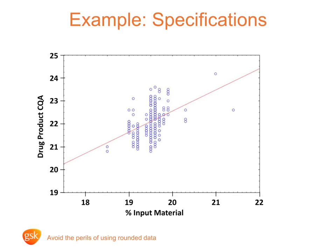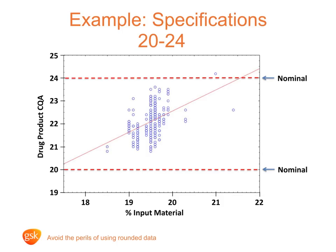This is Phil, and I want to discuss another example which again highlights the importance of using recorded data. I will then go on to use this example to illustrate the difference between nominal and effective specification limits. This slide illustrates a relationship between a drug product's critical quality attribute and an input material. This graph has been plotted using the reported data, which has resulted in a stripy grid effect, and there are a number of data points which are overlaid with one another. It would have been much better to plot the recorded data, which would have avoided these issues.